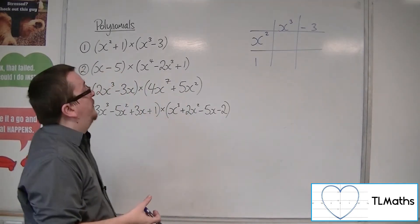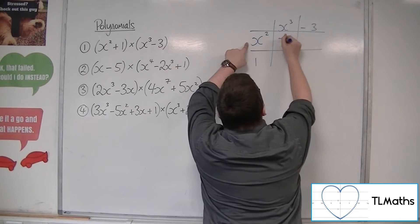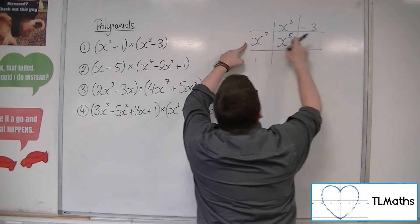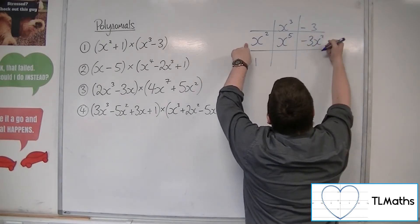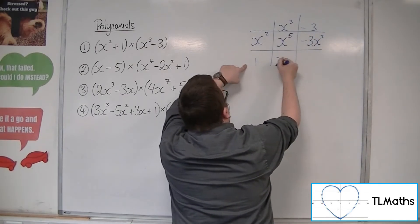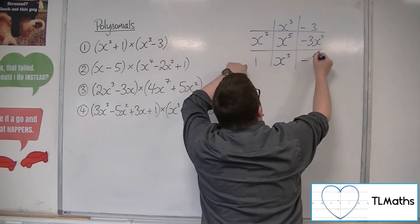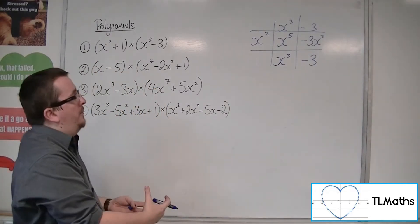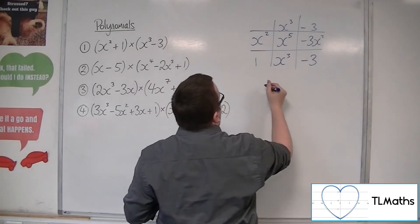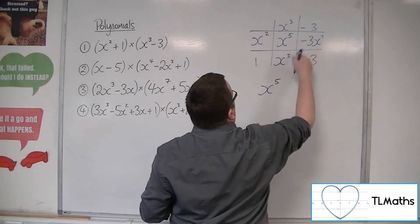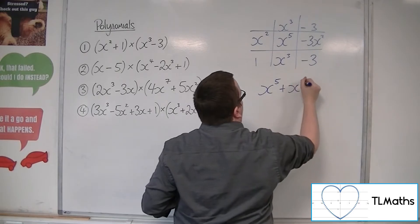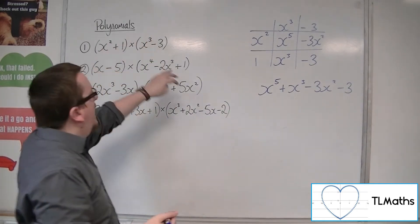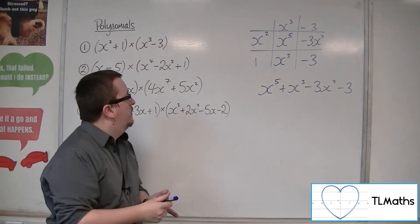x squared times x cubed is x to the 5, because remember the indices add together. x squared times minus 3 is minus 3x squared. x cubed times 1 is x cubed, and minus 3 times 1 is minus 3. So going from the highest power down to the lowest, this will be x to the 5 plus x cubed minus 3x squared minus 3. And that is what you get when you expand those brackets.